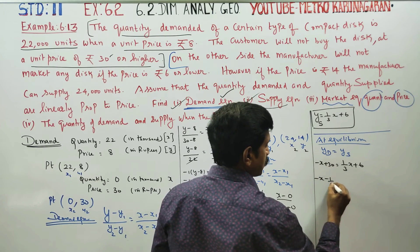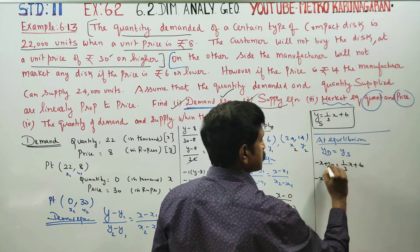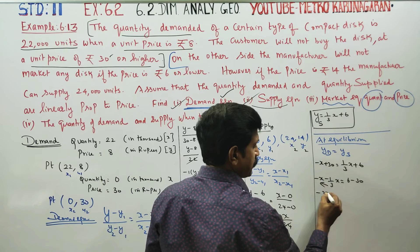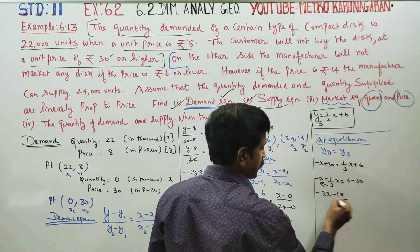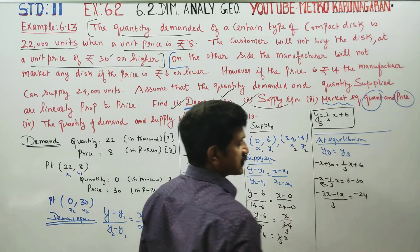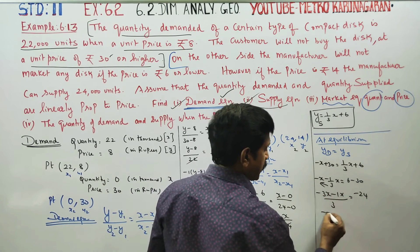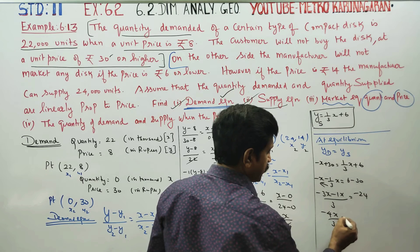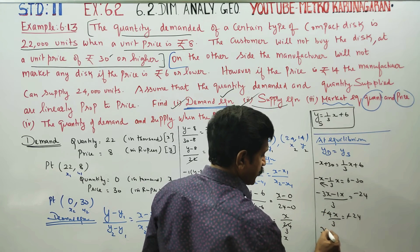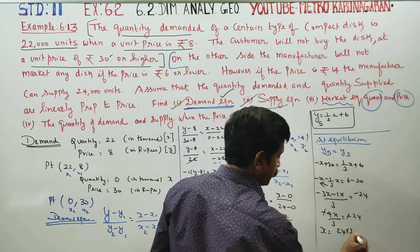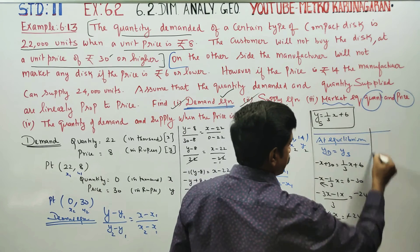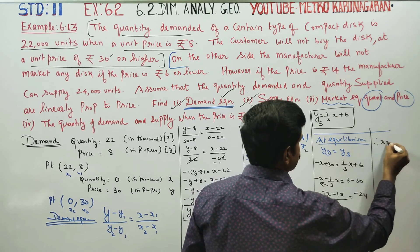Rearranging: -x - (1/3)x = 6 - 30, giving -(4/3)x = -24. Therefore x = 24 × 3/4 = 18. The equilibrium quantity is x = 18.